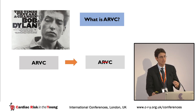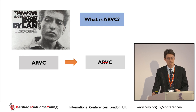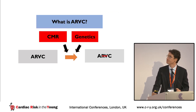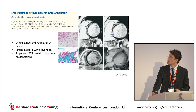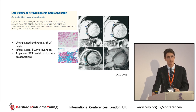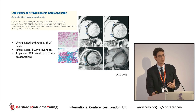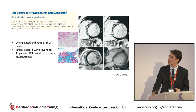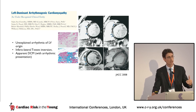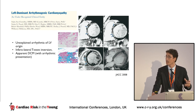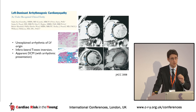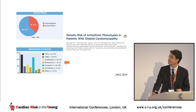We are used to defining ARVC as a condition where fibro-fatty replacement predominantly affects the right ventricle, but we are increasingly realizing this is a biventricular disease — both right and left ventricles are affected. We realized this mainly through increasing use of cardiac MRI and genetic tests. One of the first descriptions of left-dominant arrhythmogenic cardiomyopathy used cardiac MRI. CMR has a huge advantage over echocardiography because it can detect myocardial fibrosis and scarring even when left ventricular ejection fraction is normal. When we combine right ventricular abnormalities with late gadolinium enhancement on CMR, we can define this condition.